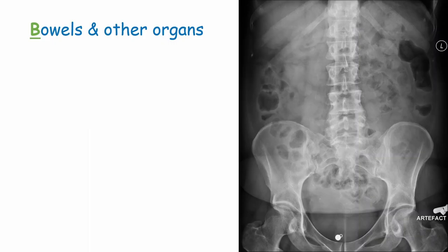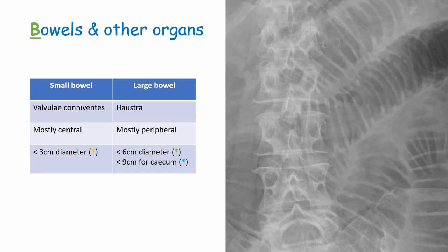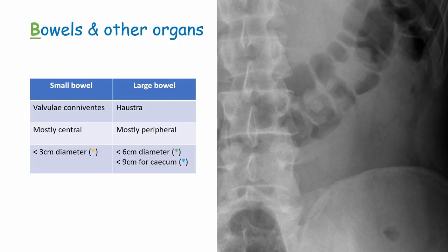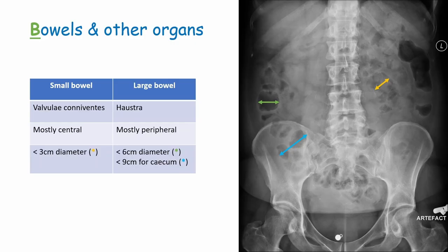Once we've completed checks, we move on to B for bowels and other organs. We firstly need to distinguish the small bowel from the large bowel using three main features. The small bowel has valvulae conniventes - mucosal folds generally visible across the whole width of the bowel. The large bowel has haustra, which look like sacs and form lines that don't usually cross the whole width. Generally, the small bowel is central and the large bowel peripheral. The 3-6-9 rule: small bowel should be ≤3cm, the colon <6cm, and the cecum <9cm in diameter.